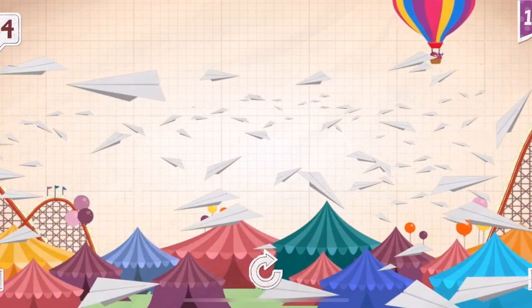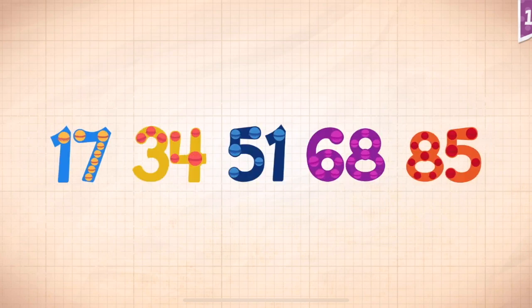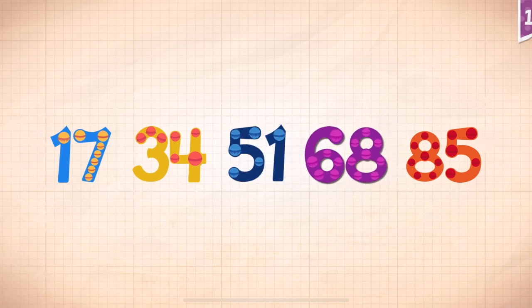Scampi and Rocky threw 84 paper airplanes into the sky. Count by 17s: 17, 34, 51, 68, 85.